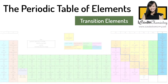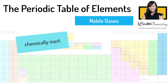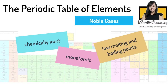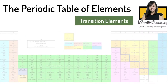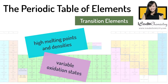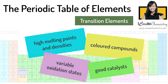In a nutshell, noble gases are chemically inert because of their stable electronic configurations. They are monatomic and are used widely due to their chemical stability. Noble gases have very low melting and boiling points. Transition elements have high melting points and densities. Their oxidation states in compounds are variable, they form colored compounds, and transition elements and their compounds are good catalysts.